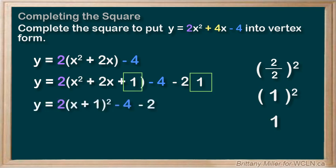So the 2 stays out front, and then we have x plus 1 squared, and then minus 4 minus 2 equals minus 6, making our final answer 2 times x plus 1 squared minus 6.